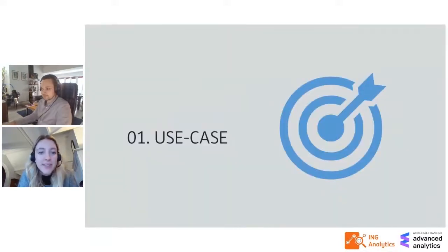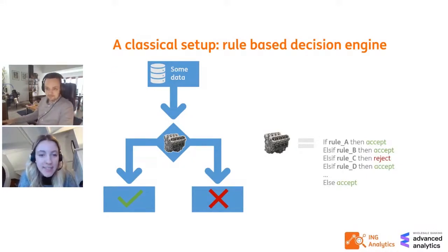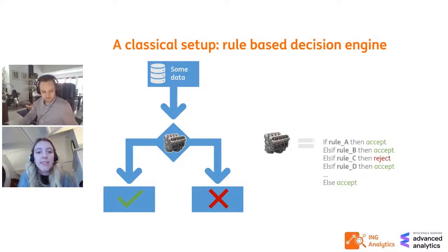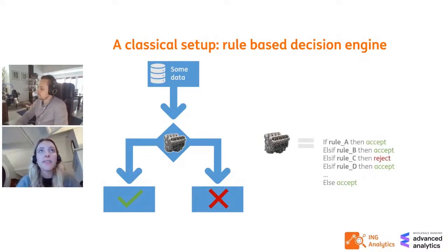This use case revolves around the acceptance and rejection of applications for mortgages and business loans. The setup for this application acceptance/rejection process was done many years ago, and it essentially consisted of a classical rule-based decision engine. When a customer applies for a mortgage or a loan, the decision engine at ING receives the application data and verifies how compliant the application is within the decision rules set up by business.